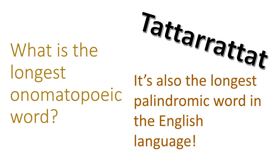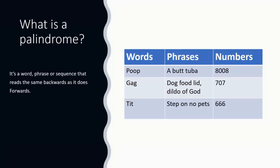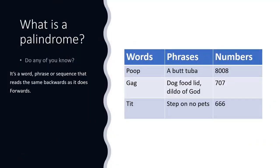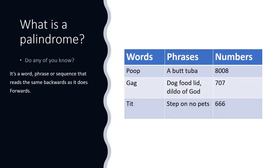It's also the longest palindromic word in the English language. What is a palindrome? It's a word, phrase or sequence that reads the same backwards as it does forwards. I think we were meant to put that before I explained what it was. Some examples of palindromes are poop, gag or tit. Each of those are spelt the same way backwards as they are forwards.